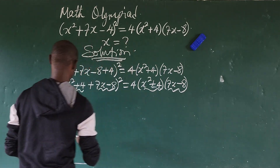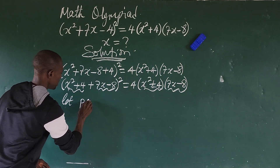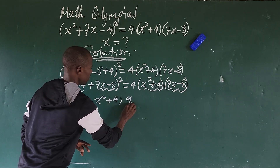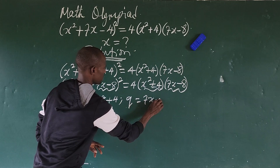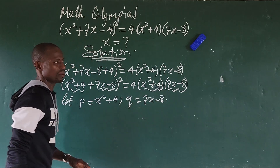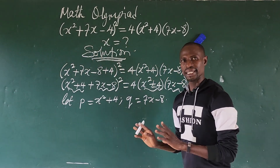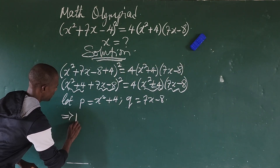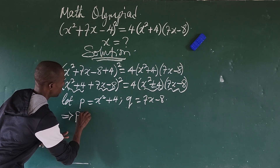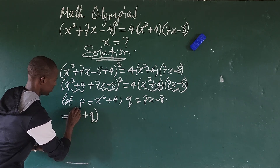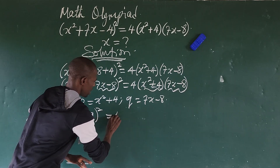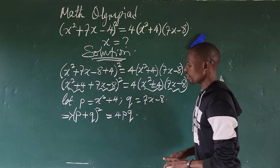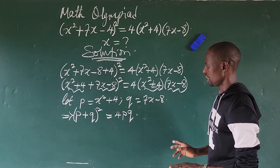Let's do a substitution and bring p and q into the system. Let p = x² + 4 and q = 7x - 8. We can now rewrite the whole equation in a special way. This implies (p + q)² = 4pq.